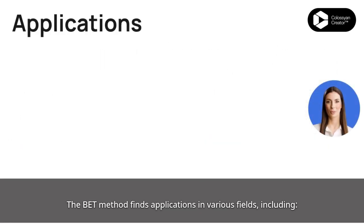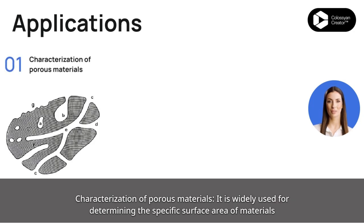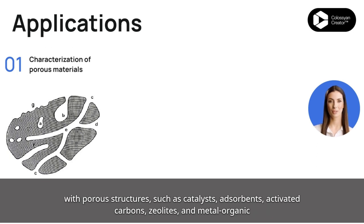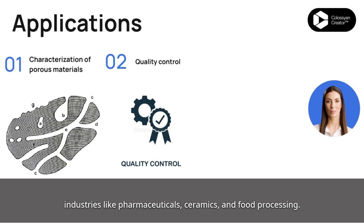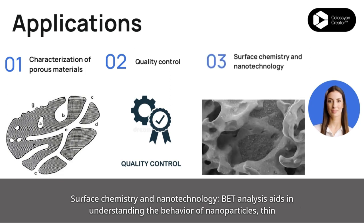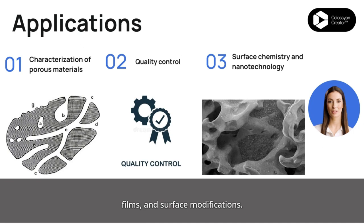The BET method finds applications in various fields, including characterization of porous materials. It is widely used for determining the specific surface area of materials with porous structures, such as catalysts, adsorbents, activated carbons, zeolites, and metal-organic frameworks. BET measurements can also be employed for quality control to ensure consistency of materials in industries like pharmaceuticals, ceramics, and food processing. BET analysis also aids in understanding the behavior of nanoparticles, thin films, and surface modifications in surface chemistry and nanotechnology.